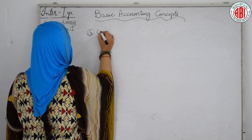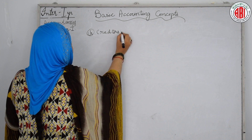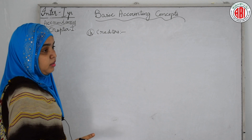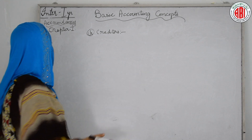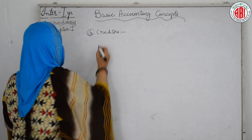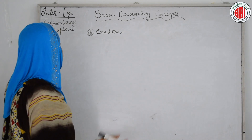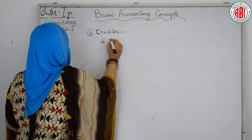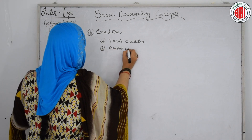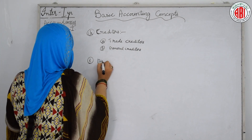Our next basic accounting topic is creditors. Creditors are those persons from whom our business has taken a loan or borrowed money, so we have to pay them. It is exactly opposite to the debtors. Creditors are also of two types: trade creditors and general creditors.